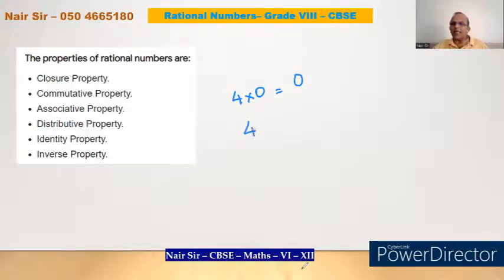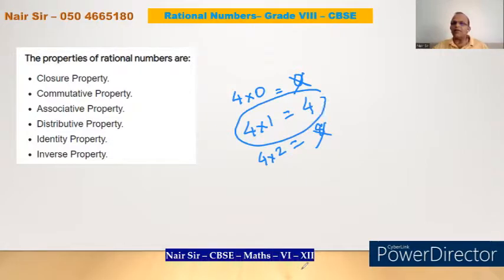What is it that I can multiply it with? If I multiply it with one, I get four. If I multiply it with two, I get eight. Lost. Identity lost. Identity is only maintained in this. So one, multiplicative identity is this.